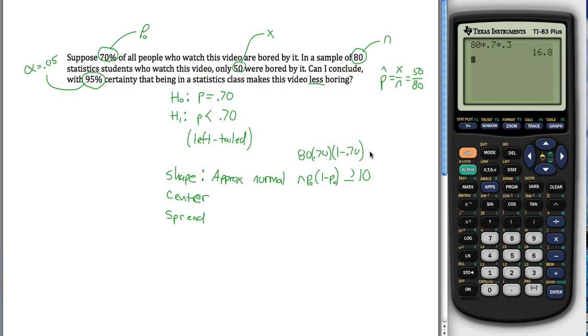And if you do that multiplication, I do it in my head, you get 16 point... I'm going to go off here, 80 times 0.7 times 0.3, you get 16.8. Sure enough, that's greater than or equal to 10, awesome, our shape's approximately normal.